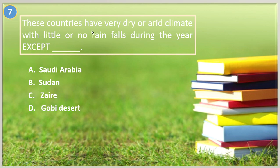Number seven. These countries have very dry or arid climate with little or no rainfall during the year — EXCEPT: A. Saudi Arabia, B. Sudan, C. Zaire, D. Gobi Desert. The answer is letter C, Zaire.